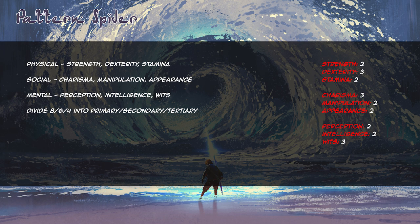When we've distributed four dots in every category, I want to upgrade two categories to six dots. Because she's a trained soldier I increase dexterity to 4 and stamina to 3. Because she works with spirits and animals I increase charisma to 4 and appearance to 3; the mental traits are left alone for now. Then I choose her primary attributes, bumping strength to 3 and dexterity to 5. We now have: strength 3, dexterity 5, stamina 3; charisma 4, manipulation 2, appearance 3; perception 2, intelligence 2, wits 3. I would consider increasing her intelligence to 3 later if bonus points allow.